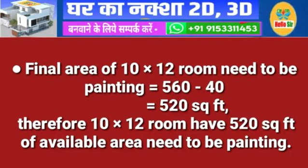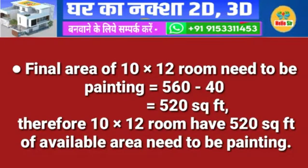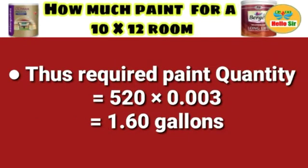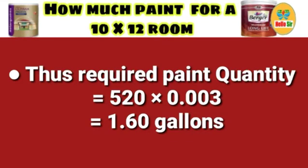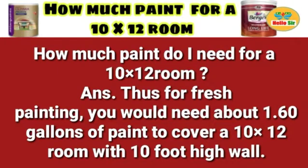The final area of the 10 x 12 room that needs to be painted equals 560 minus 40, which comes out to 520 sq ft. Therefore, the 10 x 12 room has 520 sq ft of available area to be painted. Required paint quantity equals 520 x 0.003, which comes out to 1.60 gallons. For a single coat of painting, you would need about 1.60 gallons of paint to cover a 10 x 12 room.